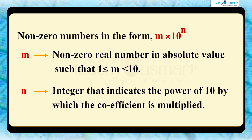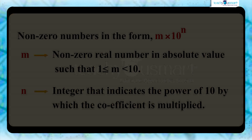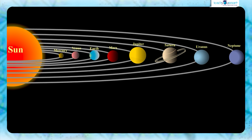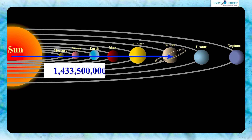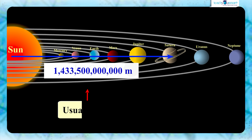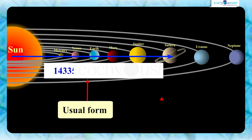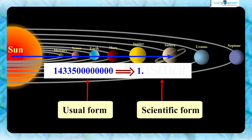This helps to express very large numbers in a more compact and manageable form. Let's look at the example of the distance between the sun and Saturn, which is 1,433,500,000,000 meters in its usual form. The equivalent of this number in scientific form is 1.4335 multiplied by 10 raised to 12.